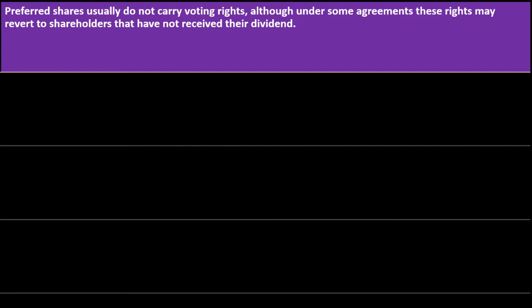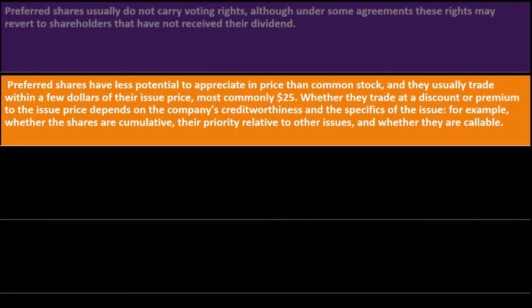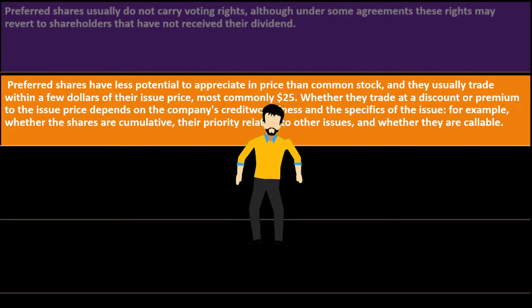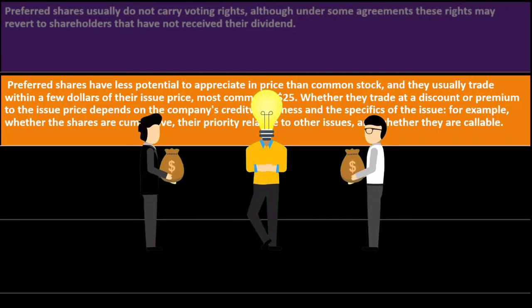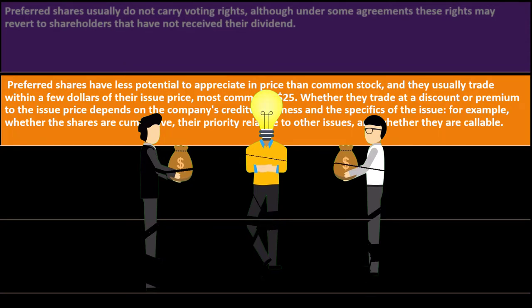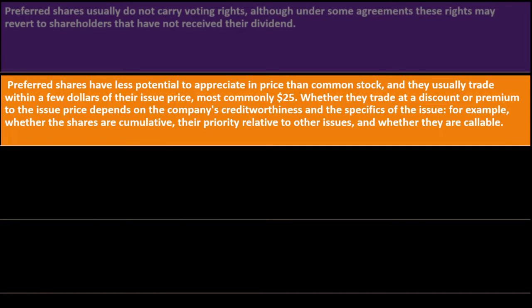Regarding voting rights, calling, and convertibility: preferred shares usually do not carry voting rights, although under some agreements these rights may revert to shareholders who have not received their dividend. Preferred shares have less potential to appreciate in price than common stock and usually trade within a few dollars of their issue price. You won't see as much volatility — which is why you'd buy common stock if you're looking for increases in investment value.